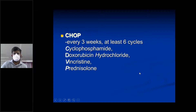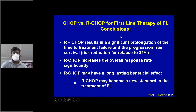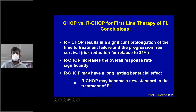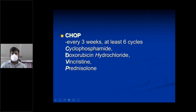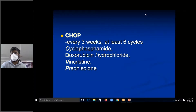CHOP versus R-CHOP for first-line therapy of follicular lymphoma: R-CHOP, which adds rituximab to CHOP, results in significant prolongation of time to treatment failure and progression-free survival, with a 35% reduction in relapse. R-CHOP increases overall response rate significantly and may become the standard treatment for follicular lymphoma.